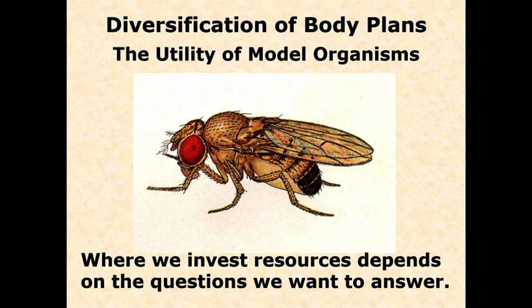Now, some of that work will inevitably end up being confirmatory — the spider does this the same way that the fruit fly does. But other things will discover differences. We may even discover, based on the phylogenetic position, some things that are similar but yet evolved convergently. And the only way we know that is if we have a good sampling of what's going on across many different taxa.